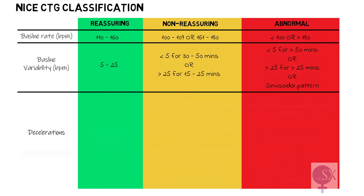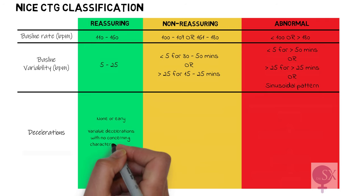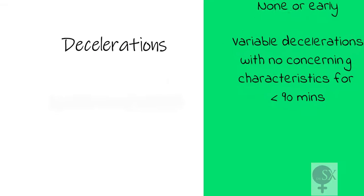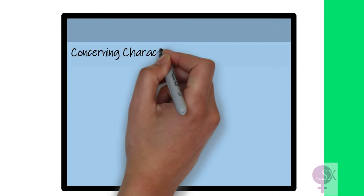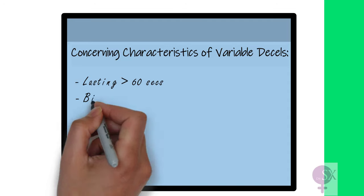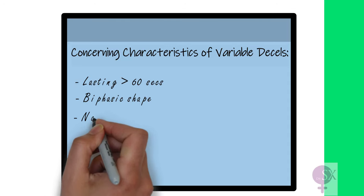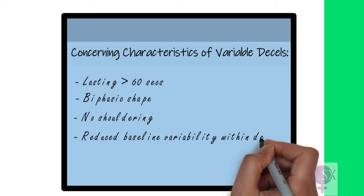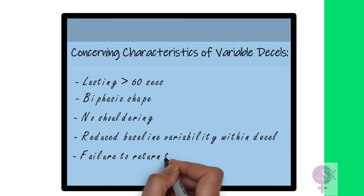Back to our table — decelerations next. Having no or early decelerations is considered reassuring. It's also reassuring when we have variable decelerations with no concerning characteristics for less than 90 minutes. The concerning characteristics of variable decelerations include those lasting more than 60 seconds, a biphasic shape, no shouldering present, reduced baseline variability within the deceleration, and failure of the deceleration to return to baseline.